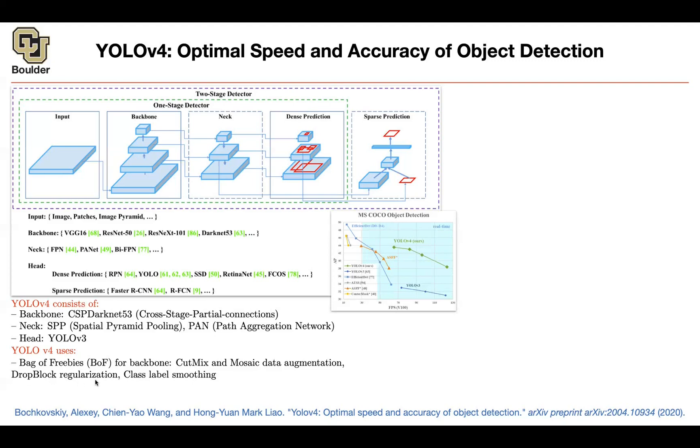Drop block regularization, you're dropping some blocks in your residual neural networks at random. It's very similar to dropout. Rather than dropping connections and weights, you're going to drop an entire block of a residual connection. Then there is class label smoothing. We covered it, and we covered it when we were covering inception architecture.